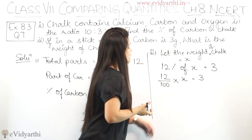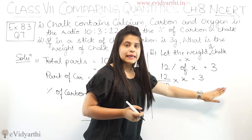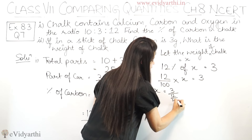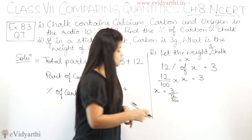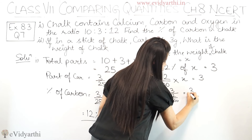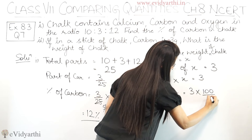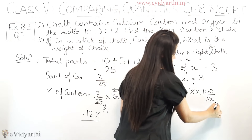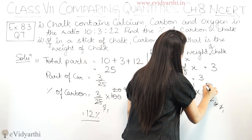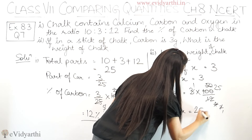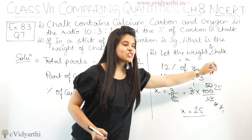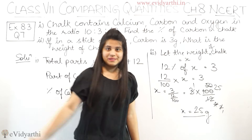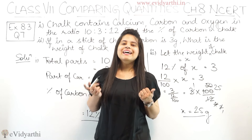Now solving for x: x = 3 ÷ (12/100). In a double fraction, we take the reciprocal of the denominator, so x = 3 × (100/12). Simplifying: 300/12 = 25. So x equals 25. X was the weight of chalk, so the weight of chalk is 25 grams. This was question number 7.